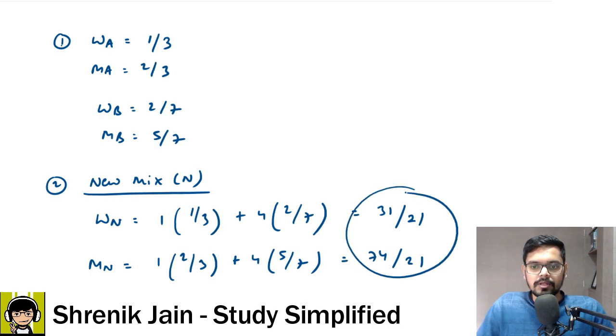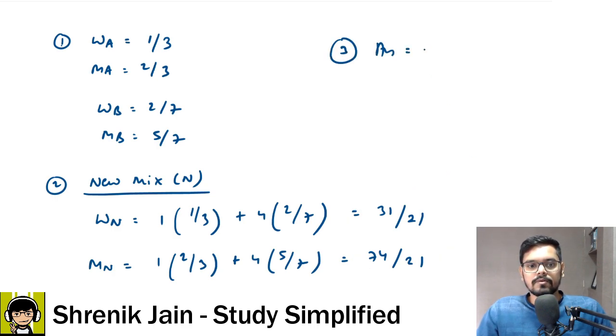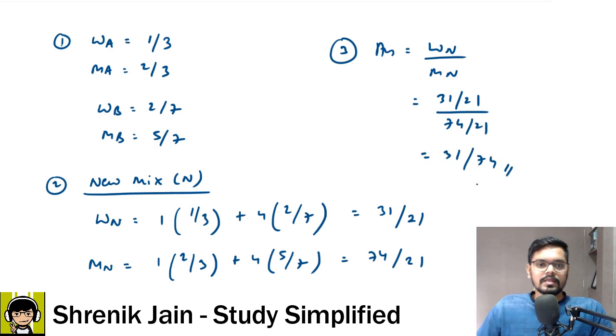Now they were asking the water to milk ratio here. You can clearly see that is 31 divided by 21 divided by 74 divided by 21 which is 31:74. That is the answer. So let me write it here. The answer which you needed in new mixture, what is water to milk that is equal to this calculation which comes out to be 31:74. Agreed? This is your method 1 to get the answer.